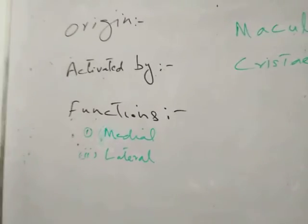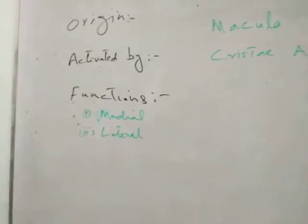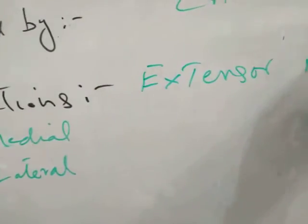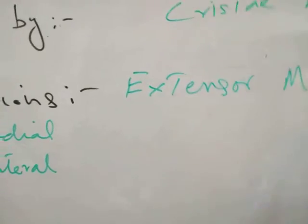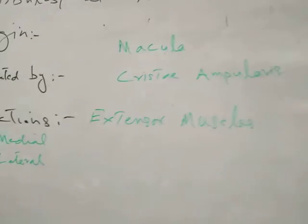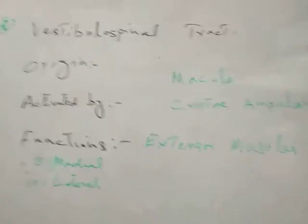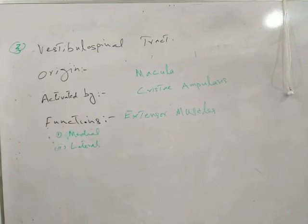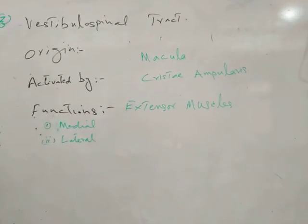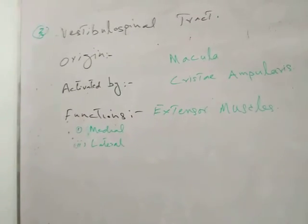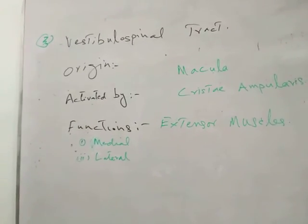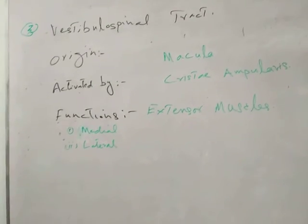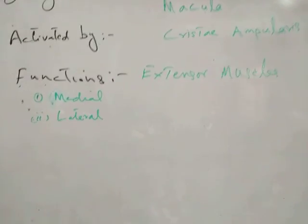Vestibulospinal Tract کی function یہ ہے کہ یہ extensor muscles کو activate کرتا ہے۔ یہ بات important ہے کہ کون سے area کے extensor muscles۔ Vestibulospinal Tract کے دو parts ہیں: ایک medially travel کر رہا ہوتا ہے، دوسرا laterally travel کر رہا ہوتا ہے۔